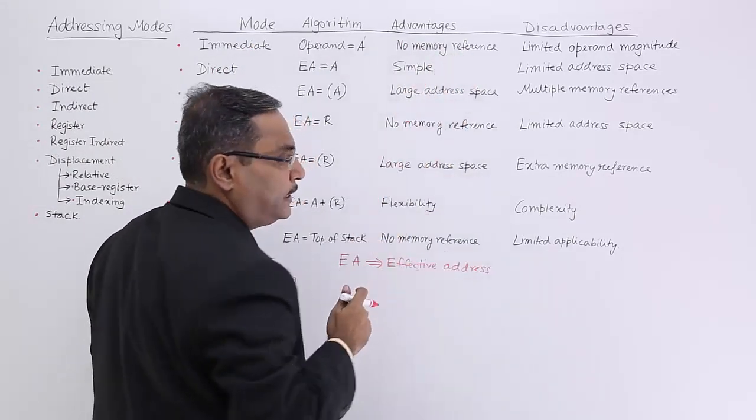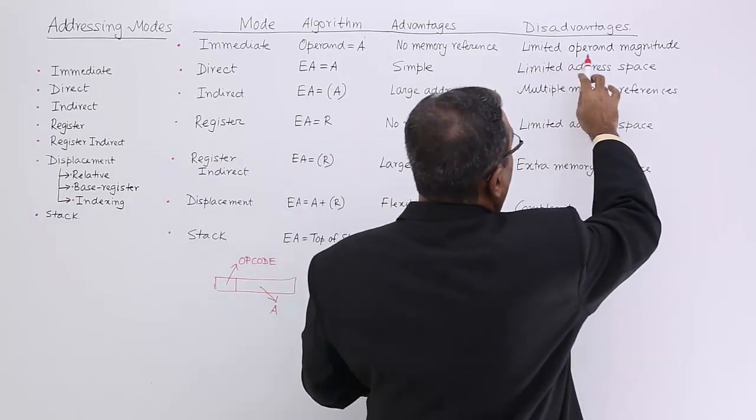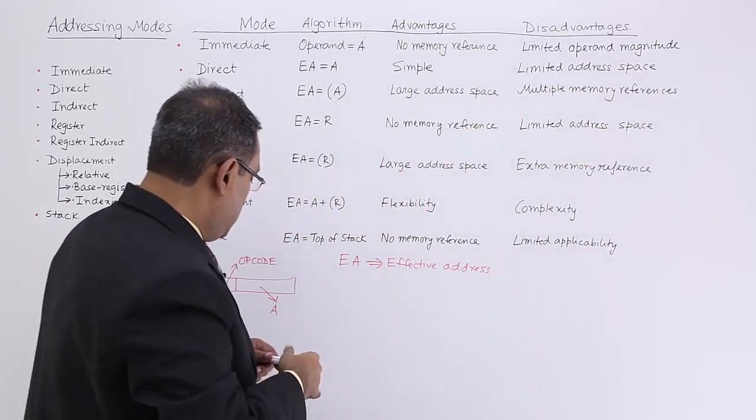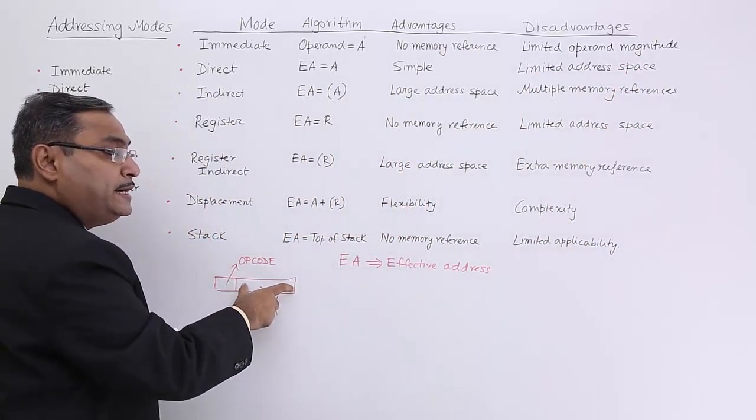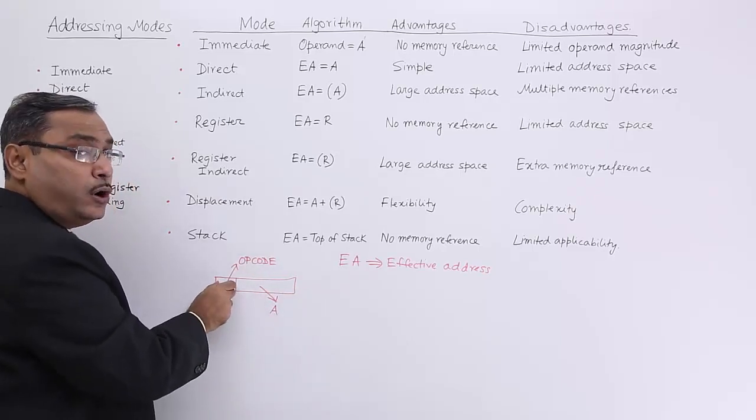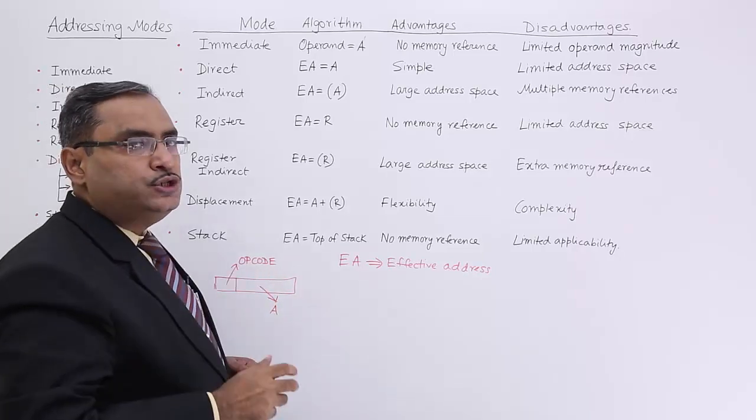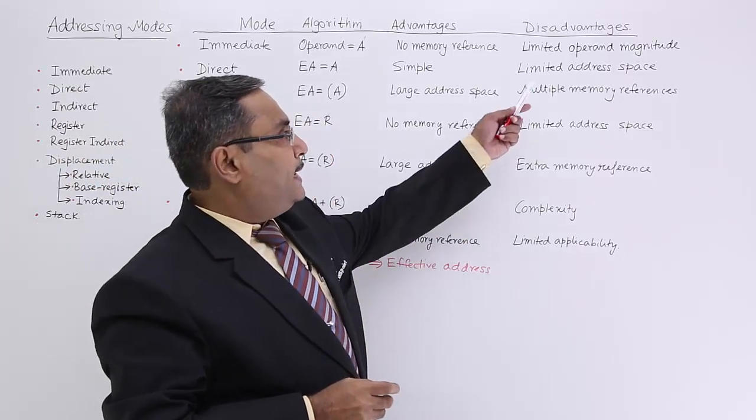Address field itself is containing operand or data in case of immediate. No memory reference is required because data is already available in the instruction, and limited operand magnitude because here depending upon the number of bits available in this instruction format excluding this opcode bits. This particular operand size will be constrained.